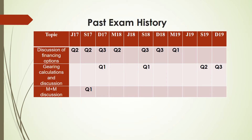Looking at the past exam history, the discussion of financing options is very important — it has been asked seven times from June 2017 to March 2019, in questions two and three, and once in question one. That means this question comes mostly as a 25-mark question in question number two or three. This is a discussion question, so you need to discuss more than calculate.